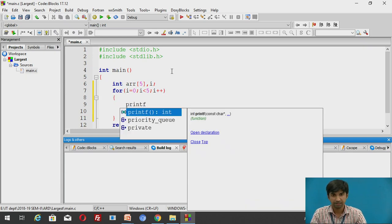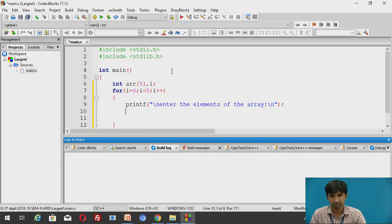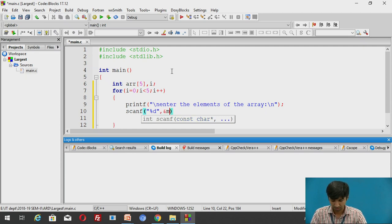Printf. I will be asking user to enter the different elements. Enter the elements of the array. I will be using a slash n symbol here so it goes to the next line. I will put a colon. Then slash n. Then afterwards end with a semicolon. scanf %d comma and marks of i. It means reading is taking place at this particular statement.